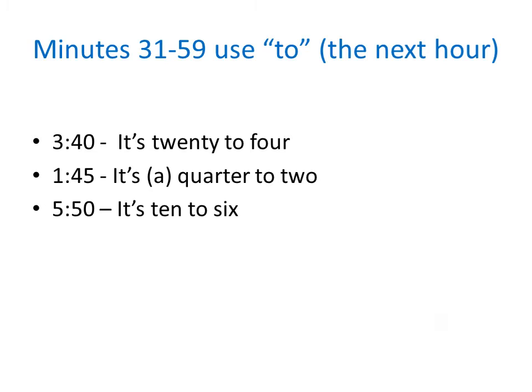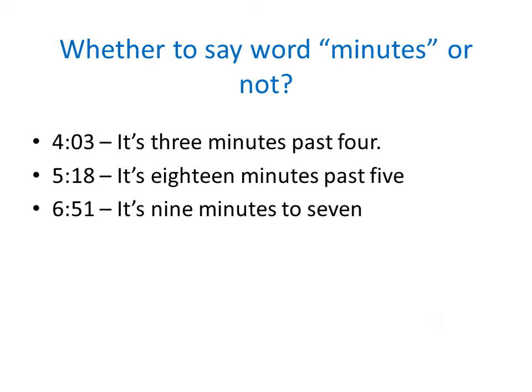With minutes thirty-one to fifty-nine, we say 'to' the next hour. We usually leave out the word 'minutes' with five, ten, fifteen, twenty, twenty-five. But we do say: It's three minutes past four. It's eighteen minutes past five. It's nine minutes to seven.